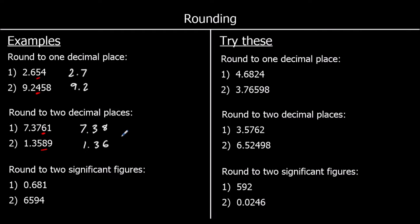Significant figures. We start counting at the first non-zero number. So the first significant figure is the 6 tenths, the second one is the 8 hundredths. So we want two significant figures — we look at the next one. If it's 5 or above, round up. It's not, so it's going to stay at 0.68.